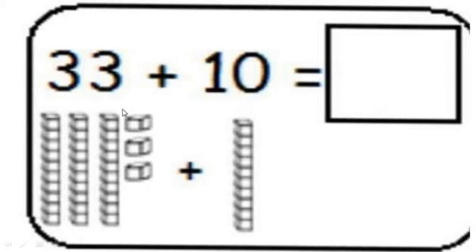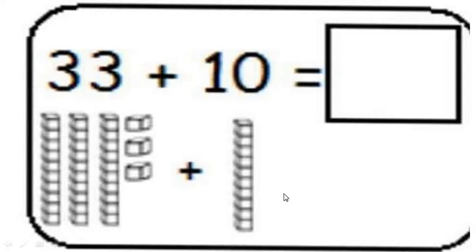33 plus 10. These are 33 blocks and this is the bunch of 10 blocks. We have to count this together. Whenever you want to make oral addition, you have to start just after the given number. So after 33 — 34, 35, 36, 37, 38, 39, 40, 41, 42, 43. Which number do I get? I get 43.